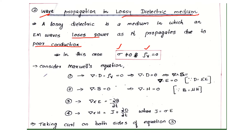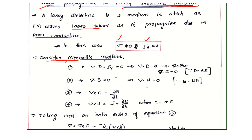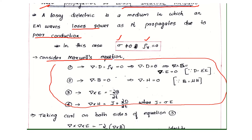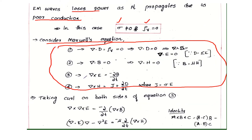To derive its equation, we have to consider Maxwell's equations. There are four Maxwell's equations: del·D equals rho_v, del·B equals 0, del cross E equals minus partial B by partial t, and del cross H equals J plus partial D by partial t.